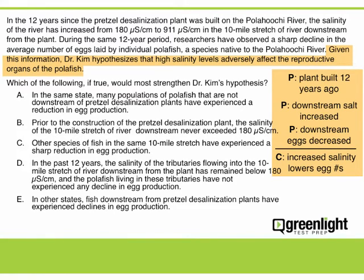Now that we've summarized the argument, can you spot any possible assumptions? Well, notice that this is a cause-and-effect argument, since the conclusion is that the high salinity in the river is causing the decrease in polar fish egg production. For cause-and-effect arguments, the primary assumption is that X is the only possible cause of Y. So one assumption here is that the increased salinity is the only possible cause of the decreased egg production.